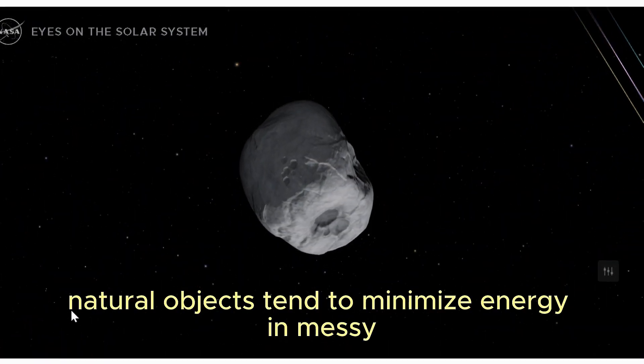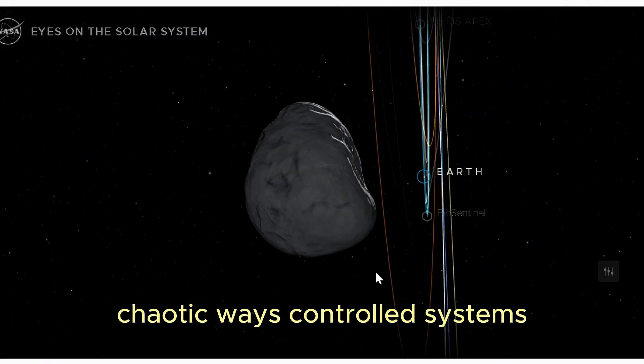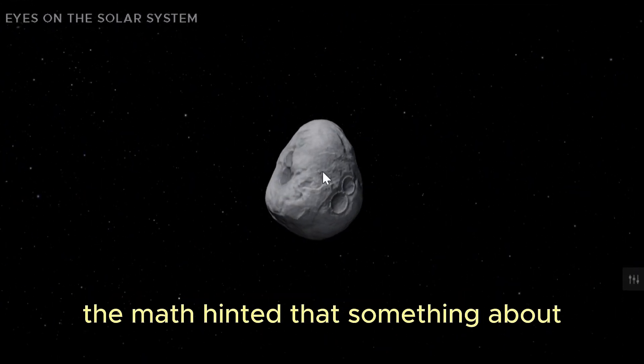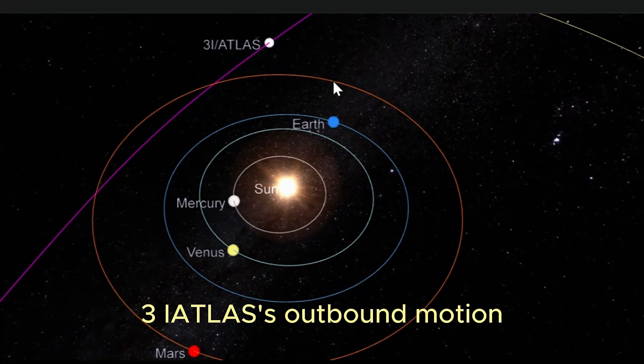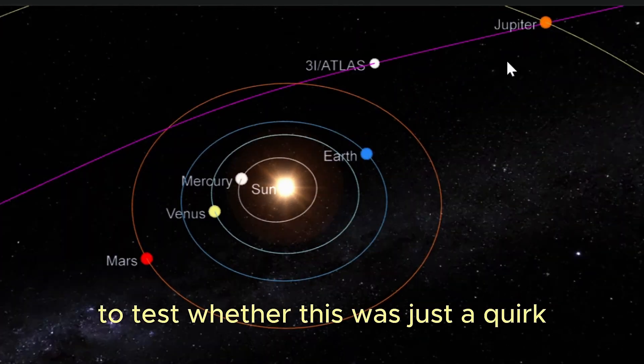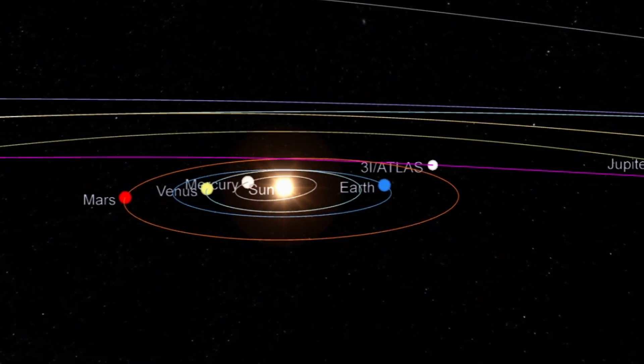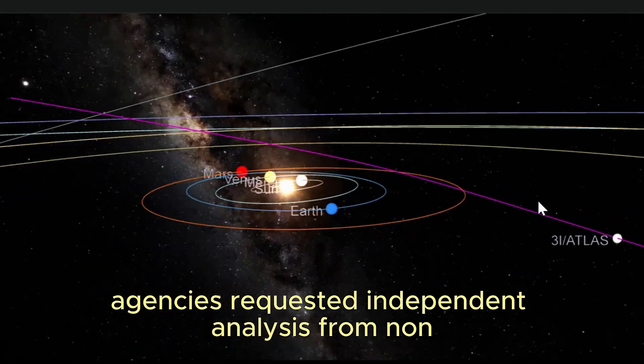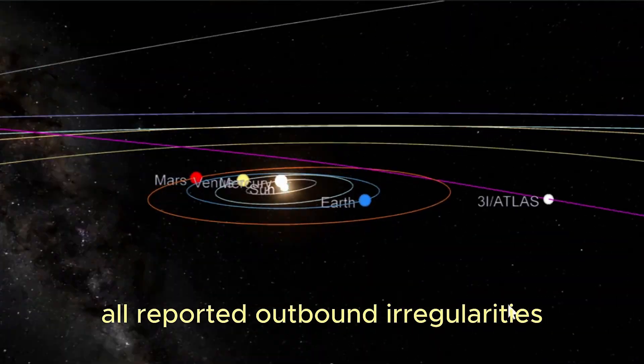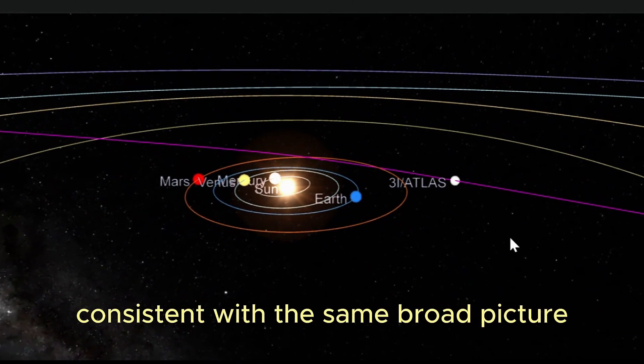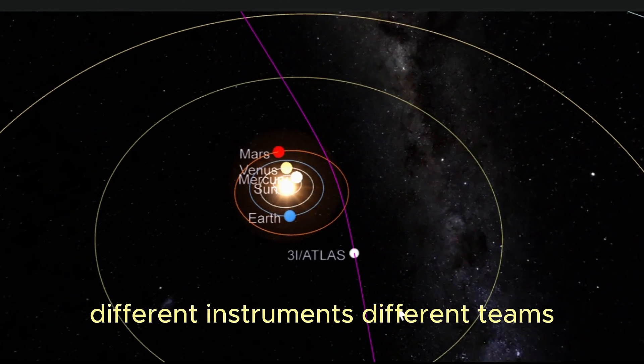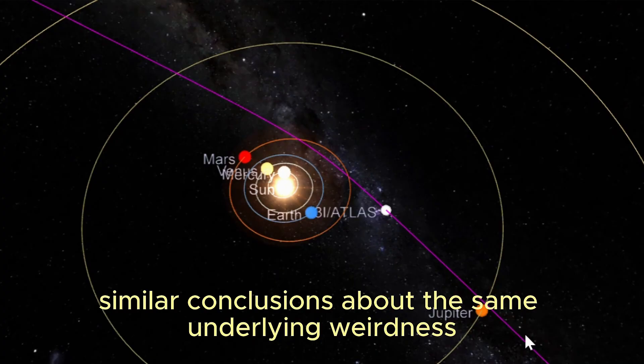Natural objects tend to minimize energy in messy, chaotic ways. Controlled systems often spend energy to maintain a desired configuration. The math hinted that something about 3I Atlas's outbound motion looked more like active damping of perturbations than simple drifting. To test whether this was just a quirk of one data pipeline, agencies requested independent analysis from non-US assets. European, Japanese, and Australian facilities all reported outbound irregularities consistent with the same broad picture: subtle adjustments, not random scatter, different instruments, different teams, similar conclusions about the same underlying weirdness.